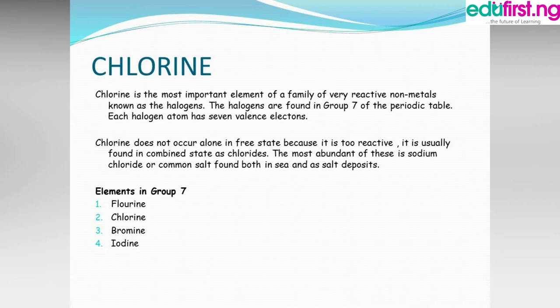Each atom has seven valence electrons — seven electrons in their outermost shell. Chlorine does not occur alone in its free state because it is too reactive. It is usually found in combined states as chlorides, and the most abundant of these is sodium chloride, or common salt.